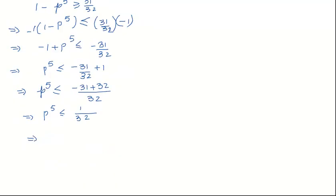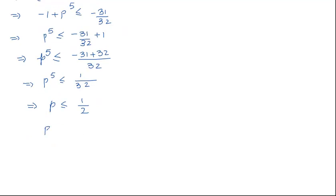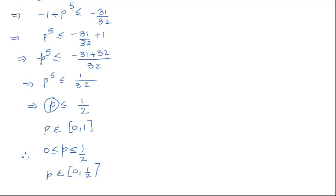Taking the fifth root on both sides, we get p less than or equal to 1 over 2. As we know, probability always lies between 0 and 1, both inclusive. So the lower limit for the probability of success is 0. Therefore, p lies between 0 and 1/2, and in interval notation, p belongs to [0, 1/2].